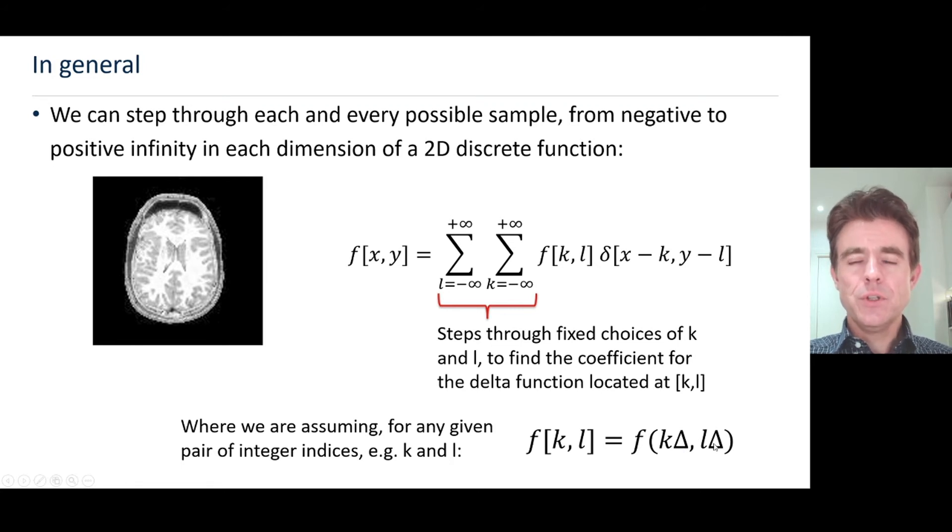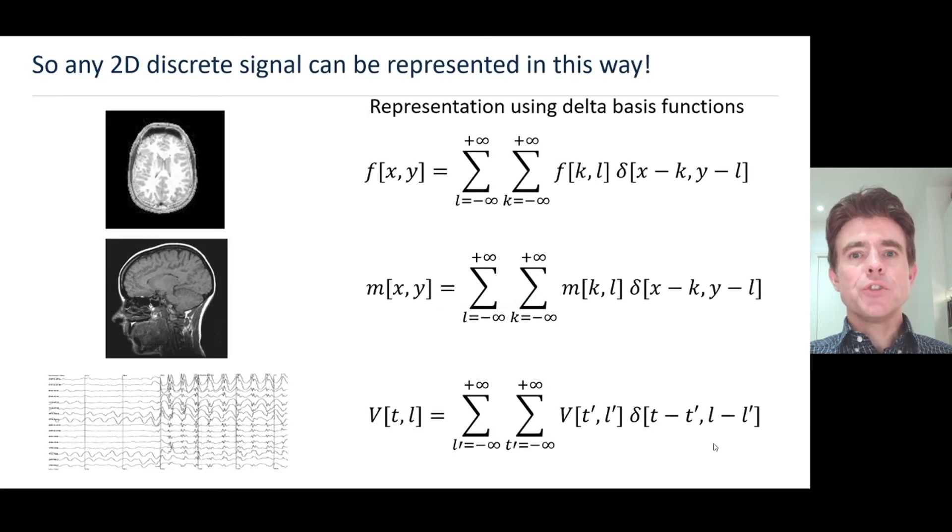Now we've seen that any 2D signal, any discrete signal or function, can be represented by a weighted—I'm using the word weight, coefficient, amplitude, intensity pretty much in the same way here. If you want to be particular, we should probably call them coefficients, but many people say weights, maybe amplitudes. Intensity is probably a bit too loose but it can be said.